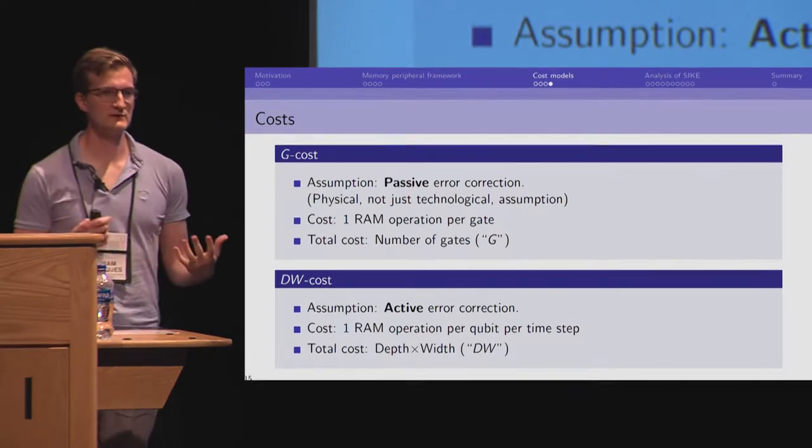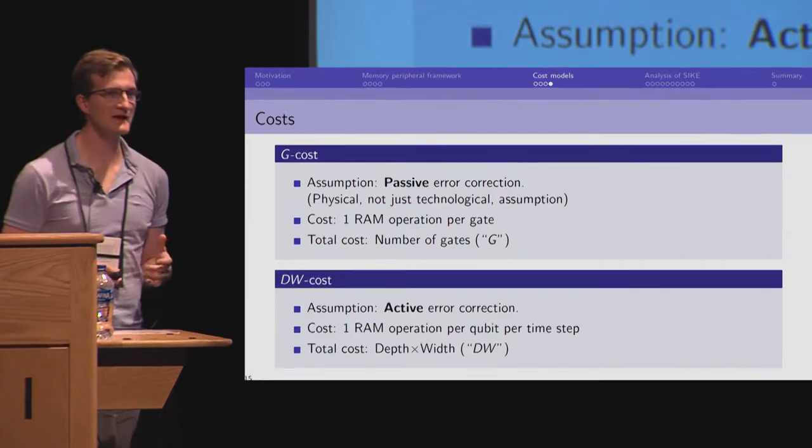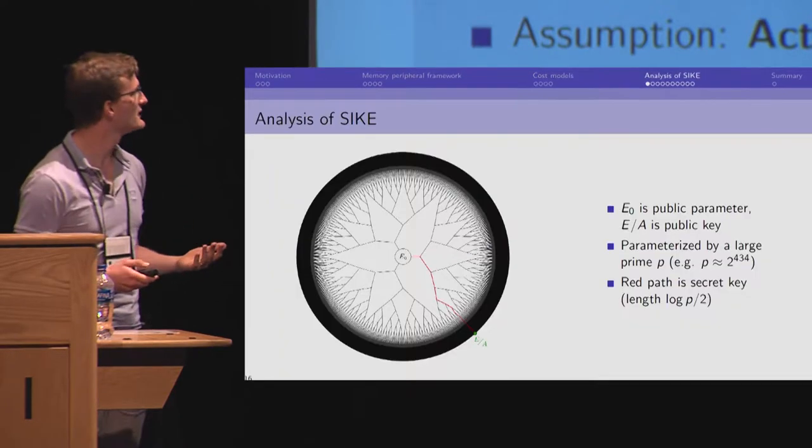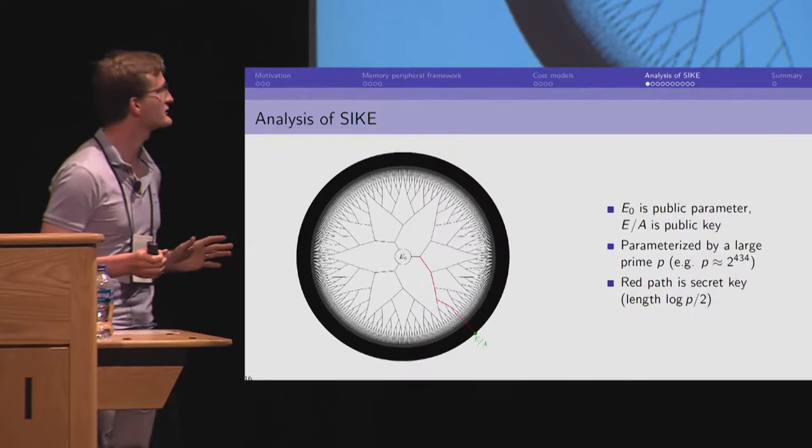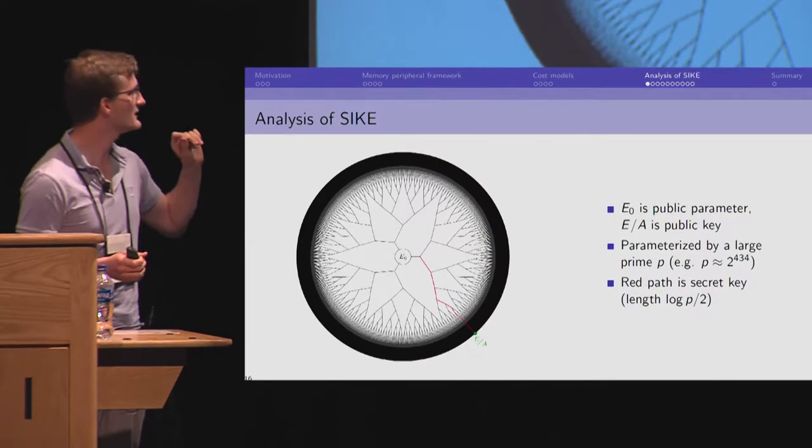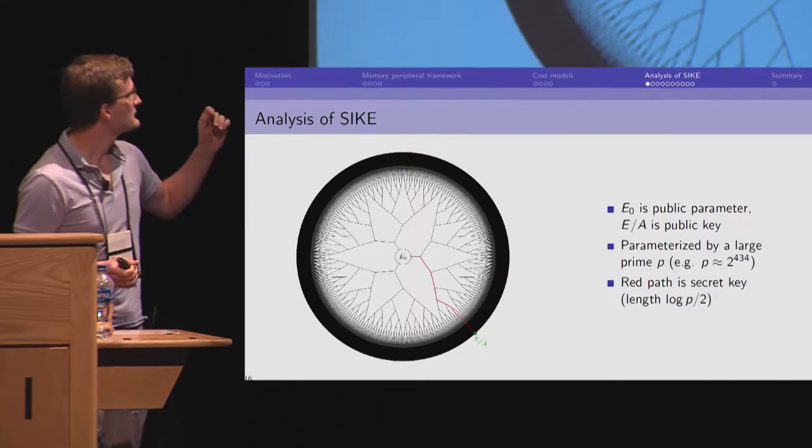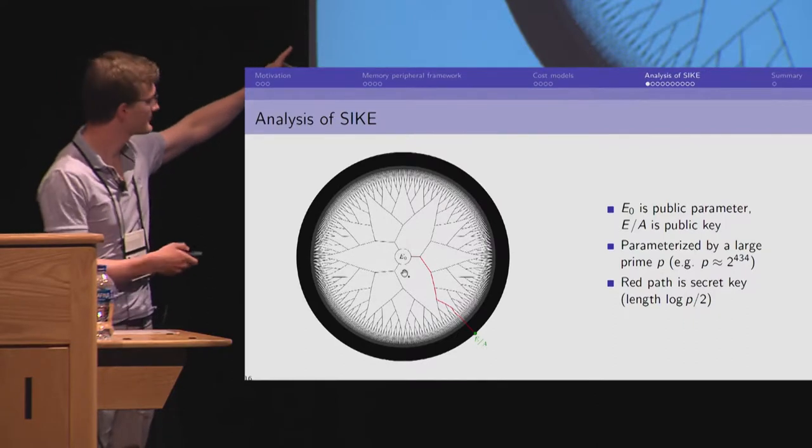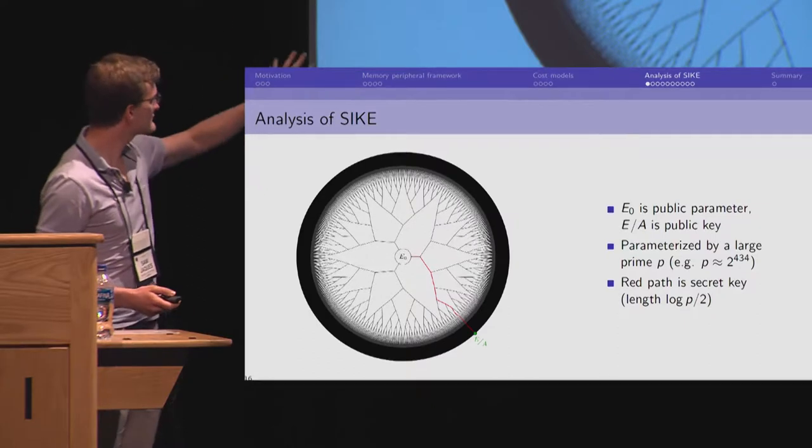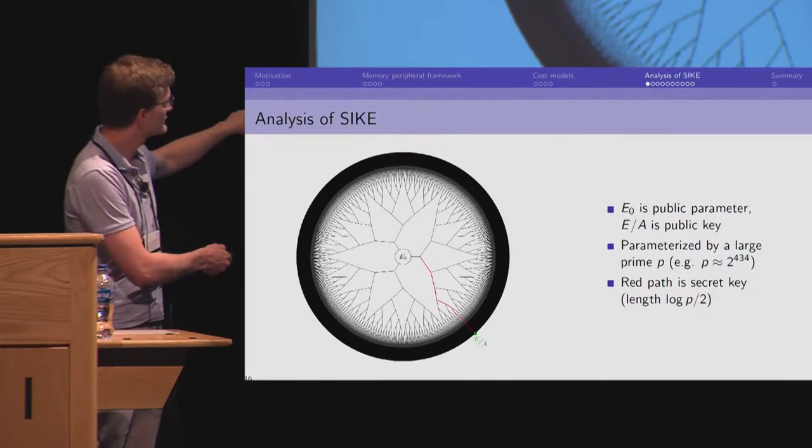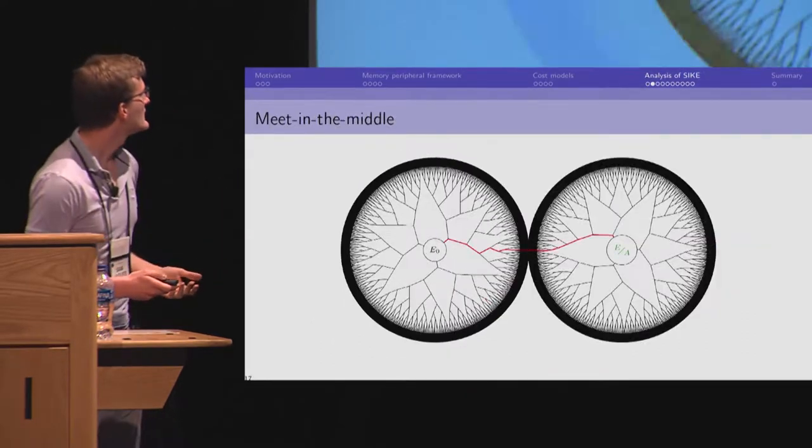So, looking at these, we might look at high memory algorithms to try to see somewhere where these two will be different. And isogeny-based cryptography is where we looked. To give a very brief overview of isogeny-based cryptography, we have a large prime P, maybe it's got 434 bits. And we have a public parameter E0 and a public key EA. And it lives in some graph and this red path is the secret key. You can find this red path, you've broken the scheme.